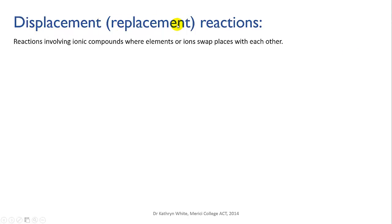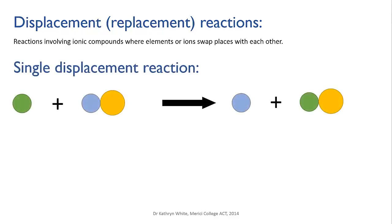The next type of reaction you might encounter is called a displacement or sometimes a replacement reaction, and there are two kinds: single and double displacements. These types of reactions involve ionic compounds, and the key feature is that ions or atoms will swap places with each other in the compounds.